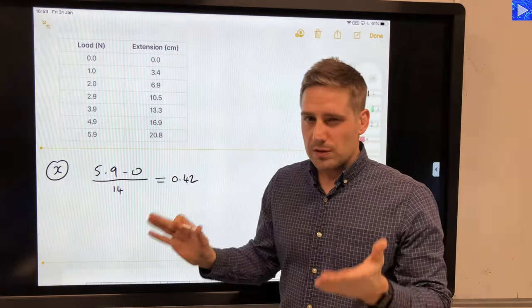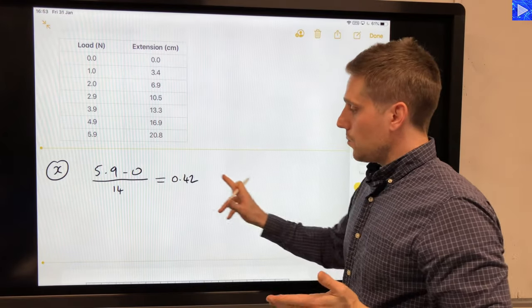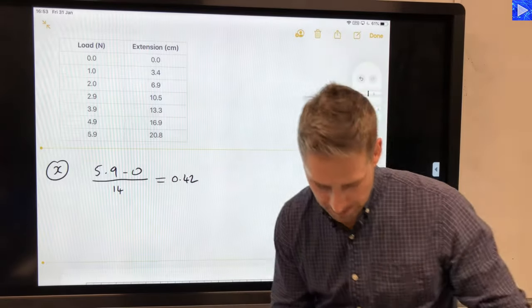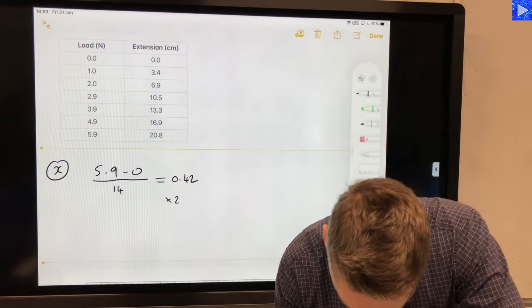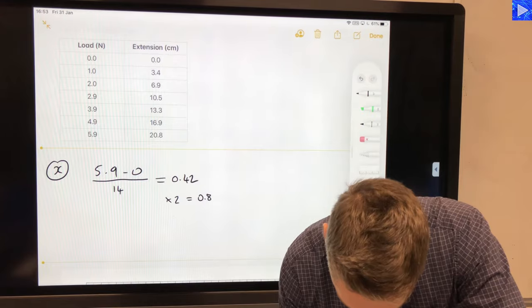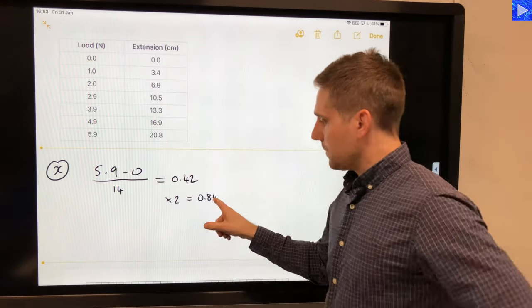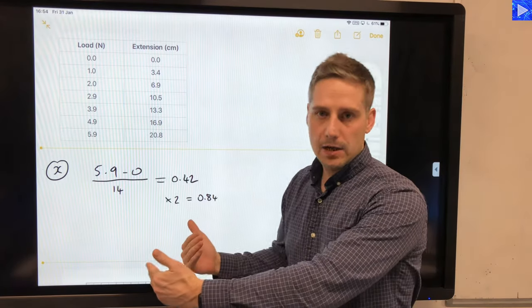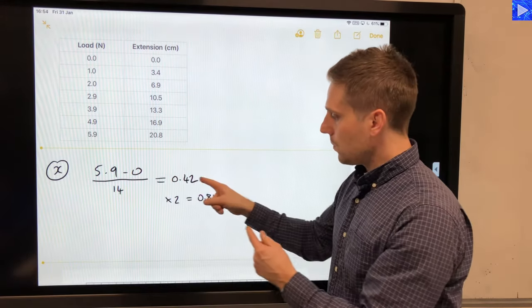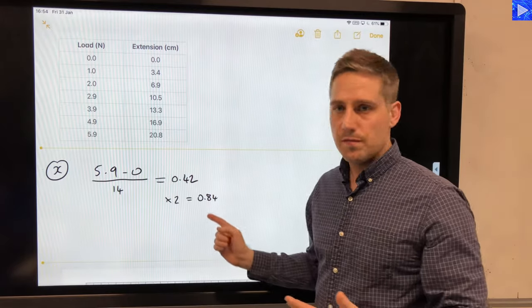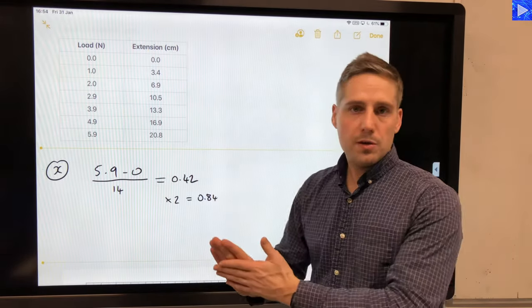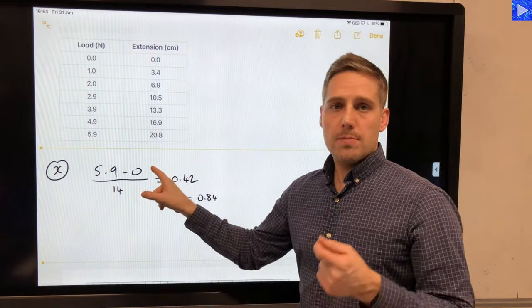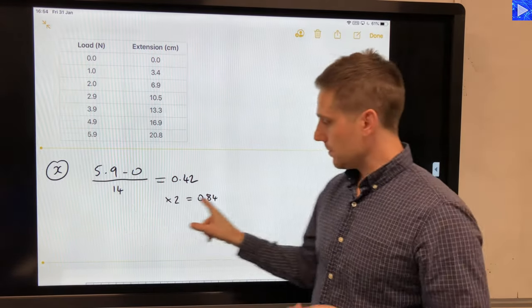But obviously 0.42 doesn't neatly divide, so what it's helpful to do here is just double this—that's times 2 is 0.84—and what that tells me is if I use 0.84 per large square then I would use exactly half of the grid. So as long as I'm between these two values then I'll be using more than half of the grid, because this is essentially 5.9 minus 0 divided by 7.